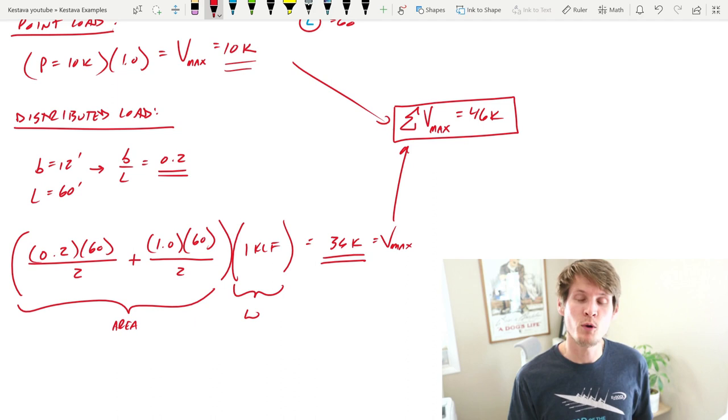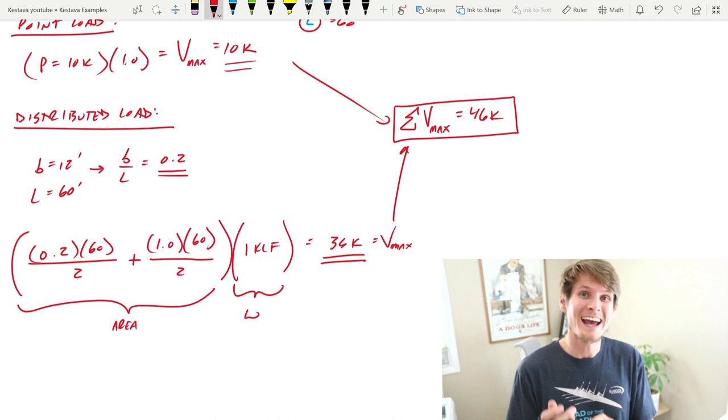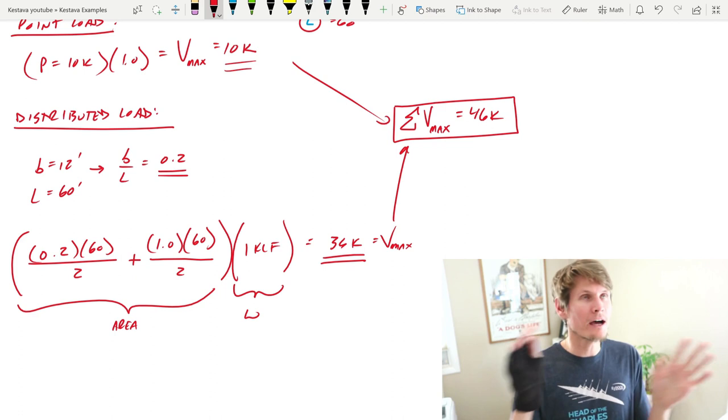So that is the max shear reaction just to the right of point B under all load criteria for the uniformly distributed load anywhere along the system and the 10 kip point load anywhere along the system. Any possible combination comes out to that being the maximum result at that location.